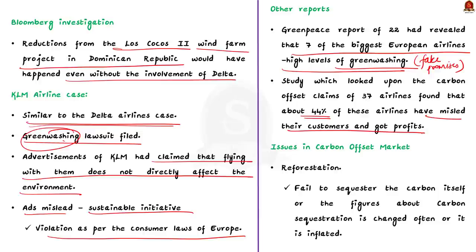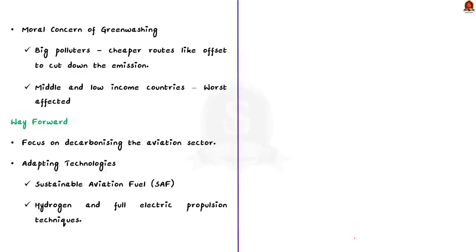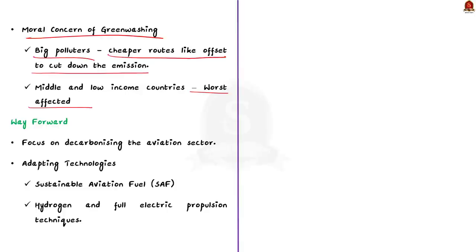Now we will analyze the issues in the carbon offset market. The first issue is that reforestation as a climate adaptation program is found to be very ineffective and misleading — they fail to sequester the carbon itself, or figures about carbon sequestration are often changed or inflated. The second issue is the moral concern of greenwashing, where big polluters use fossil fuels and use cheaper routes like offsets to cut down emissions, while middle and low income countries are the ones affected by climate realities. Offset programs will only be fruitful if they reduce carbon that would not have been eliminated otherwise, but in reality many companies invest on projects that would have been built anyway.